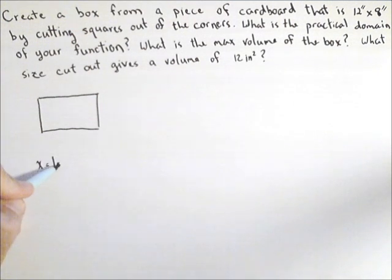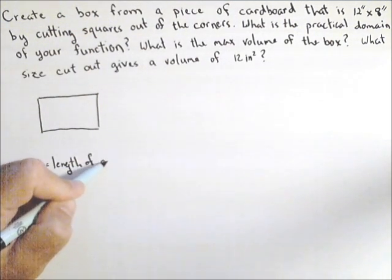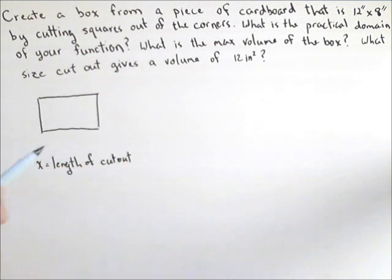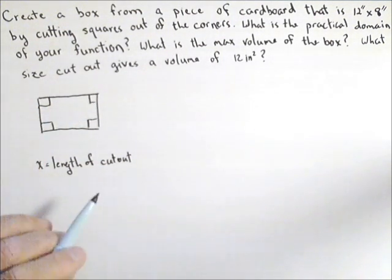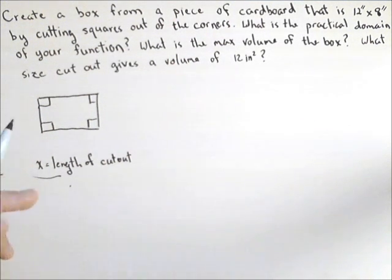So x is going to be the length of the cutout. Technically it's going to be the length of one of the sides of the cutout, but that's descriptive enough. So what's happening is we're cutting squares out of the corners so we can fold the sides up and make a box.